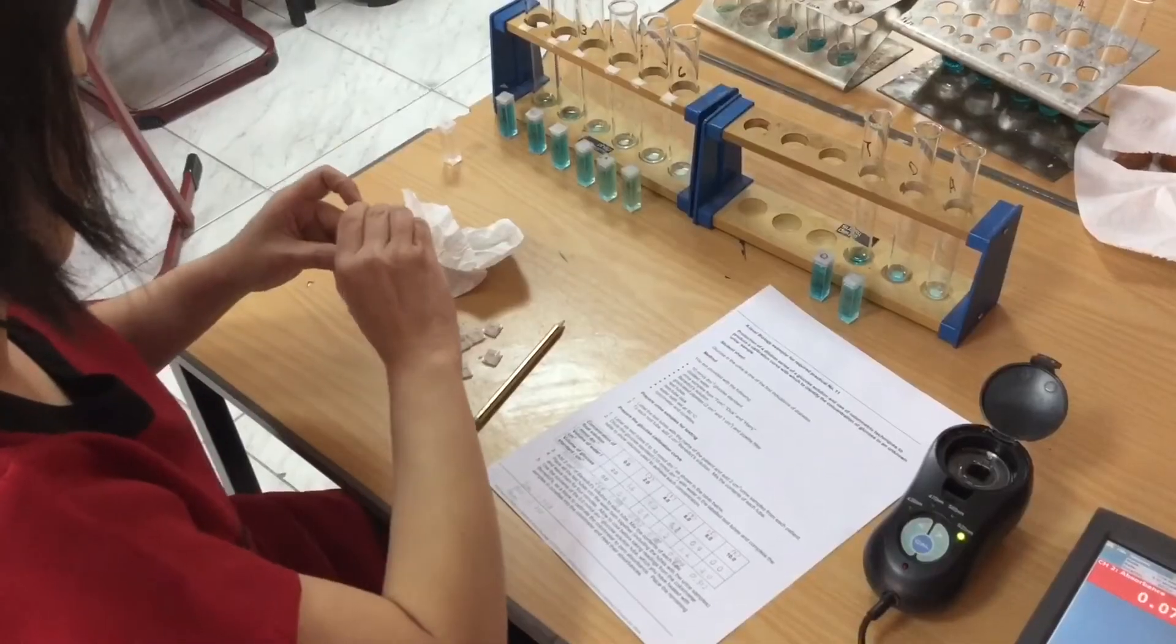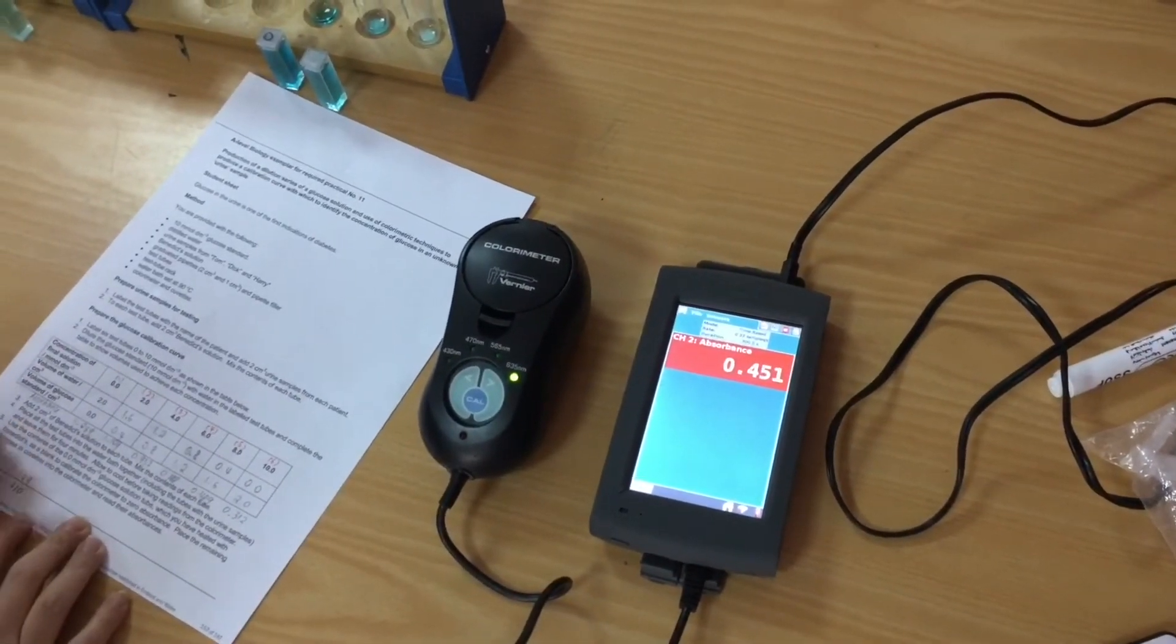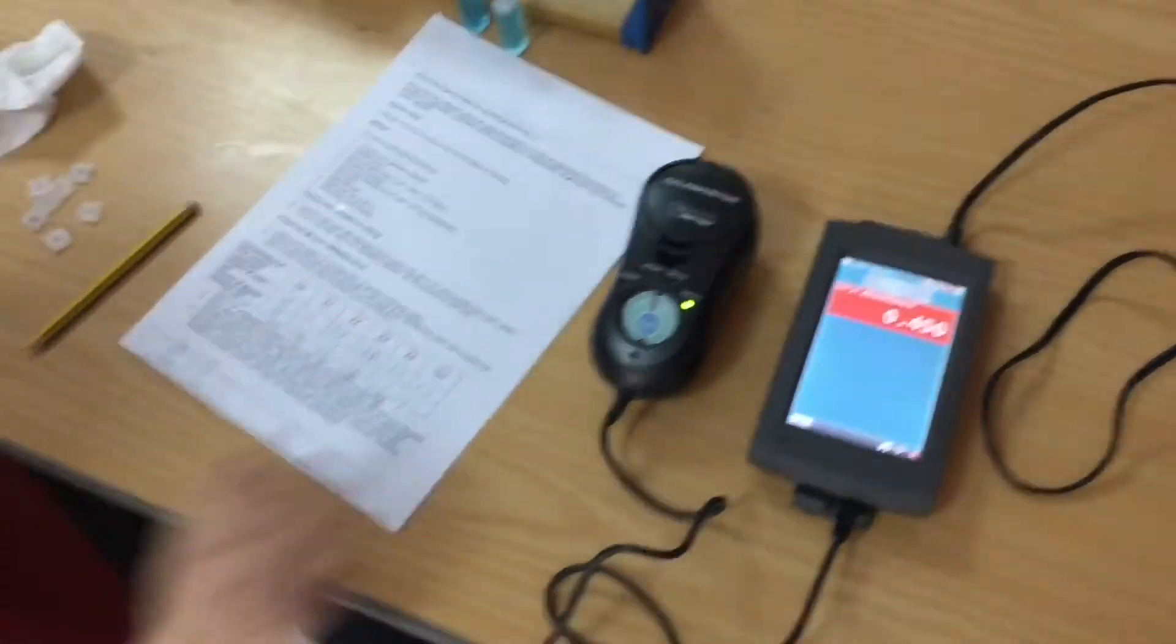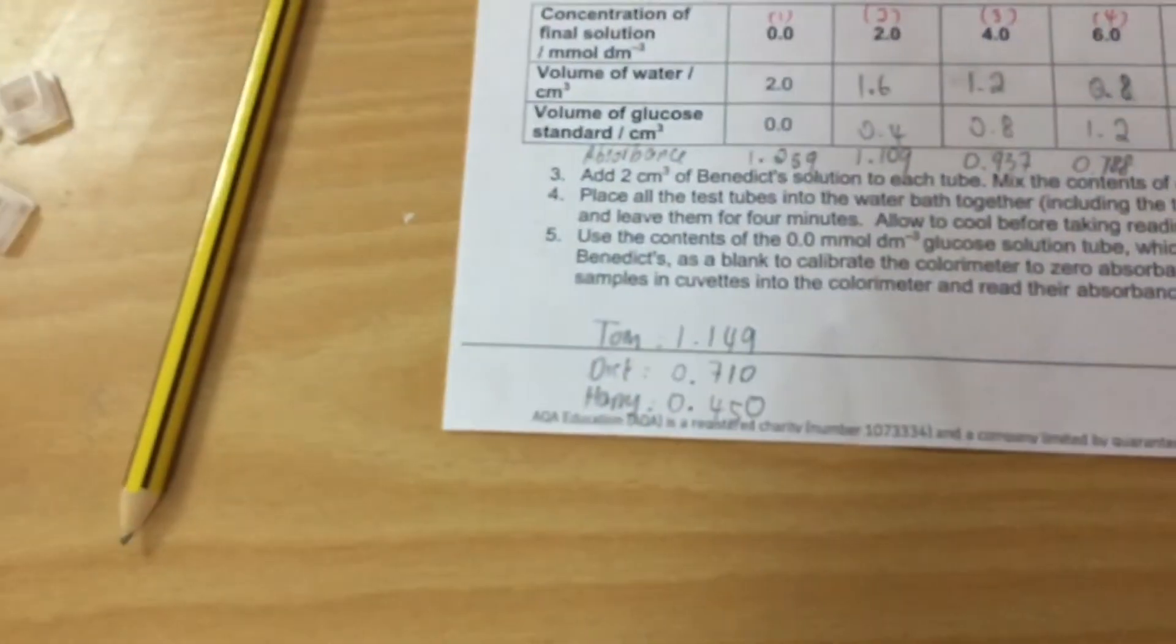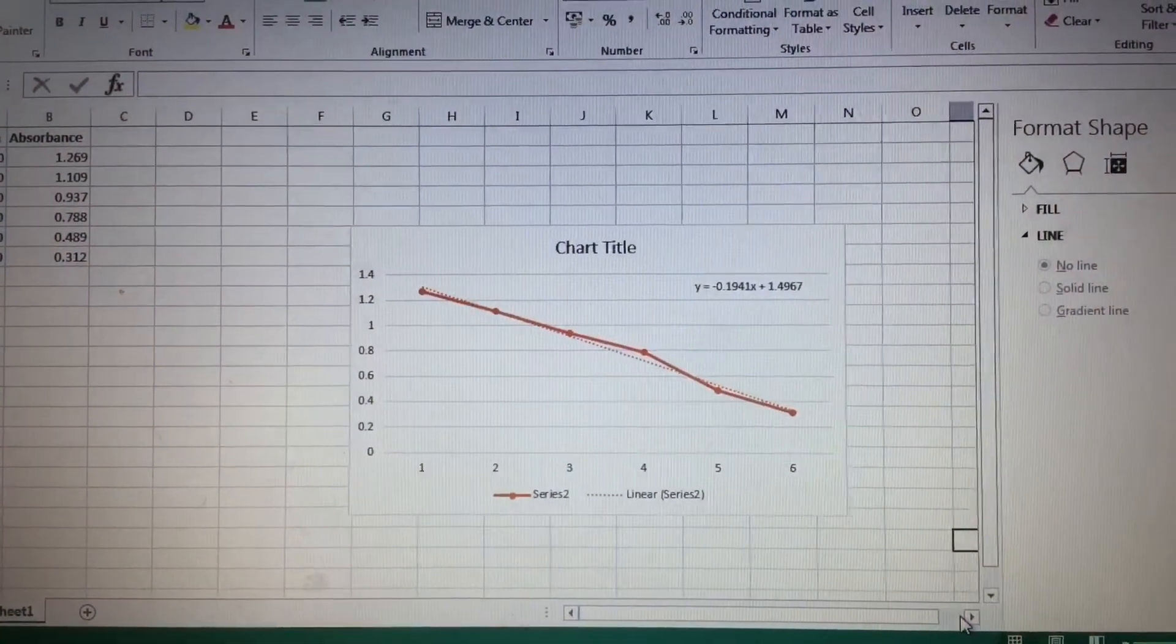I then move on to find the glucose concentration of the urine samples of Tom, Dick and Harry using the same method, measuring the absorbance and then reading off from the graph.